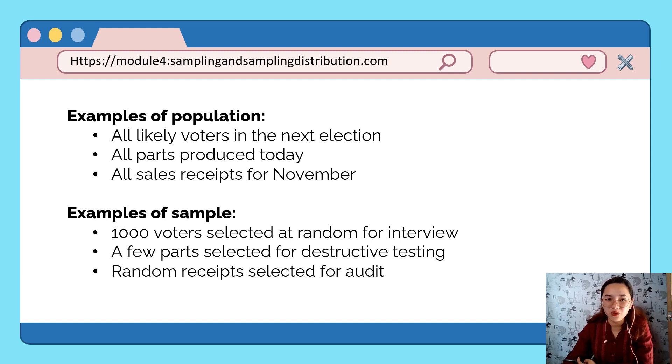Next, all parts produced today - that is our population. For example, we want to test if there are chances of having defectives, so we will choose or get a few parts, let's say 10 parts at random. That's called a sample.